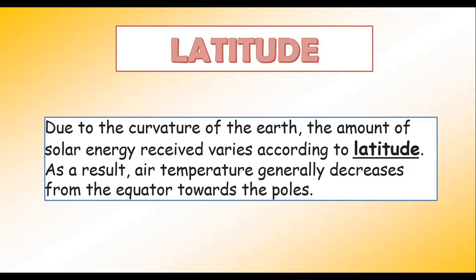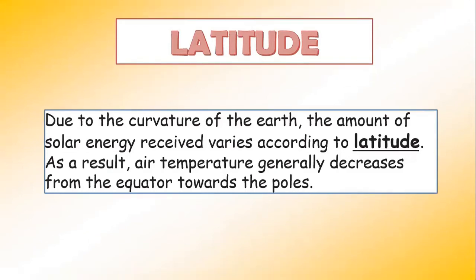As a result, the air temperature generally decreases from the equator towards the poles. When you are near the equator, you get the most amount of heat — that is going to be the hottest region on Earth. As you start moving towards the poles, it becomes colder. Due to the curvature of Earth, the amount of solar energy received varies according to the latitude, and air temperature generally decreases from the equator towards the poles.